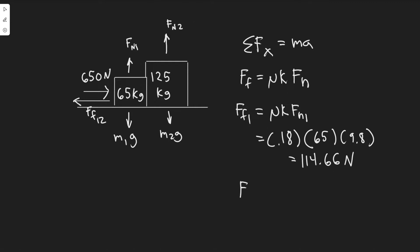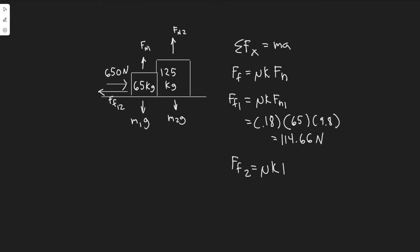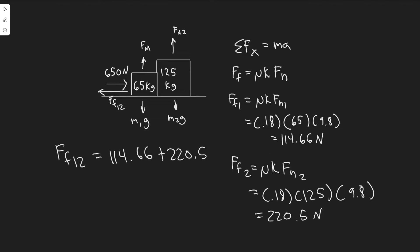Now for the second box, FF2 equals mu sub k times Fn2, which is 0.18 times m2g. So that's 0.18 times 125 times 9.8, giving us 220.5 Newtons. Now we can add these up: FF combined equals 114.66 plus 220.5, which equals 335.16 Newtons.